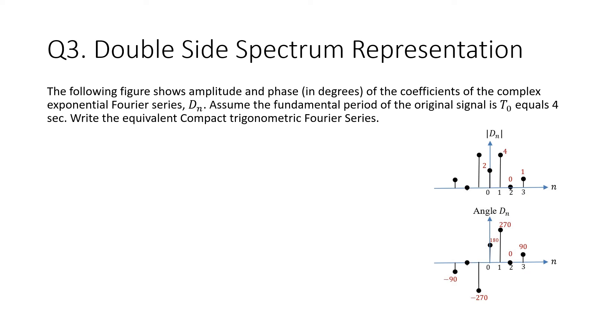Question number three says double-sided spectrum representation is shown for the following signal. I would like to write the compact trigonometric Fourier series. Remember that every impulse here represents an exponential, or every two impulses represent a cosine.